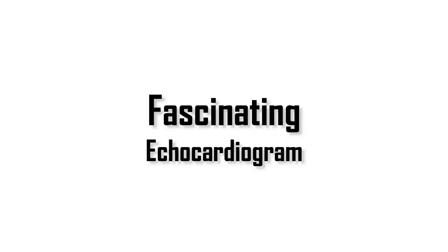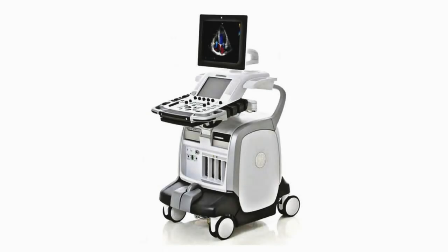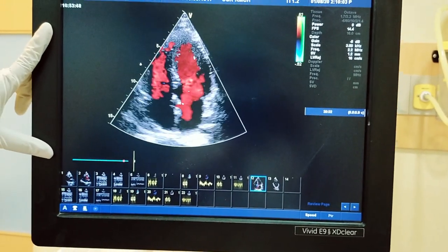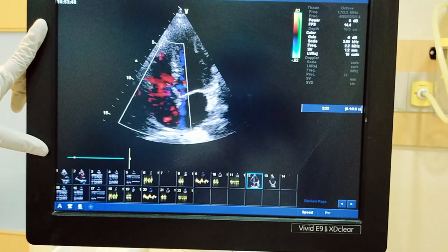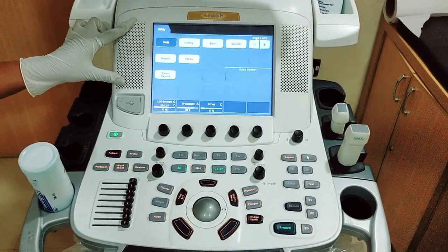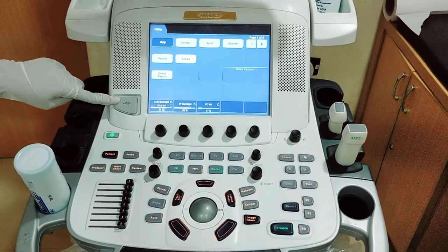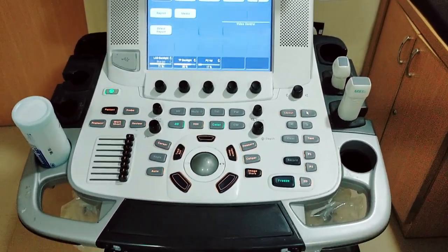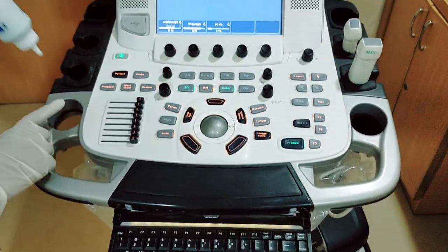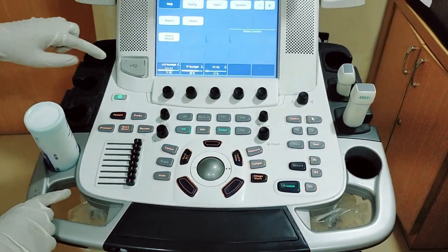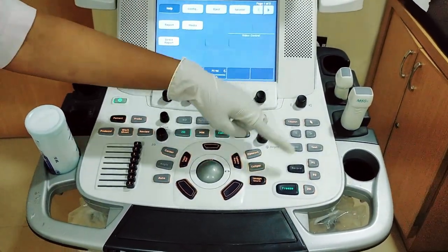Hi and hello viewers, welcome to Fascinating Echocardiogram. Today's section: the echo machine. This is the GE machine. This is the display monitor, speakers, touch panel, USB ports, keyboard, probe and J holder, and this is the control panel.